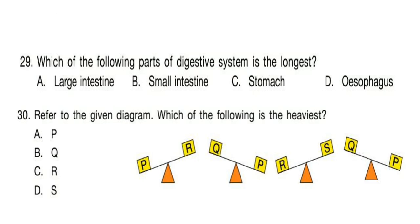Question 29: Which of the following parts of the digestive system is the longest? Correct answer is option B — small intestine. Question 30: Refer to the given diagram. Which of the following is heaviest? Correct answer is option P.